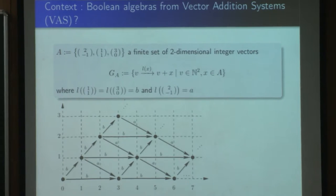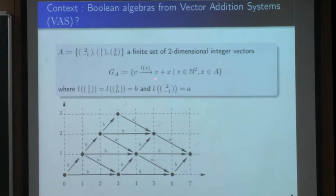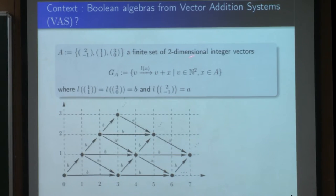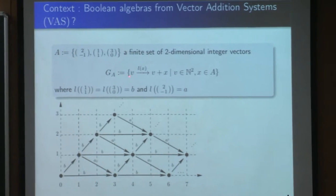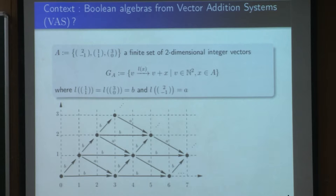Another type of automata is given by vector addition systems. A vector addition system is an automaton over vectors of natural numbers, defined from a finite set of actions. An action is an integer vector. You have an edge labeled by a, if a labels an integer vector such that when it is added to the first natural number vector, you obtain the second one. The question arises of which Boolean algebras can be obtained from vector addition systems.